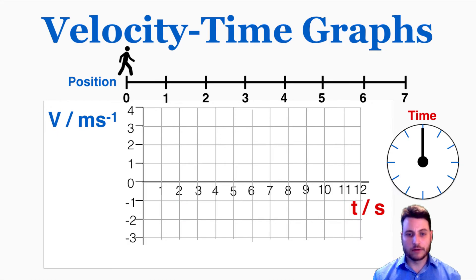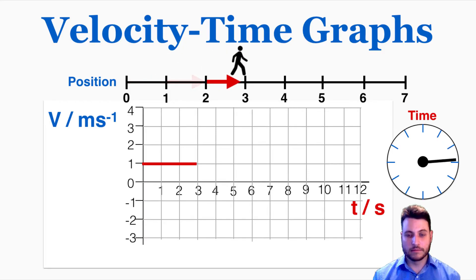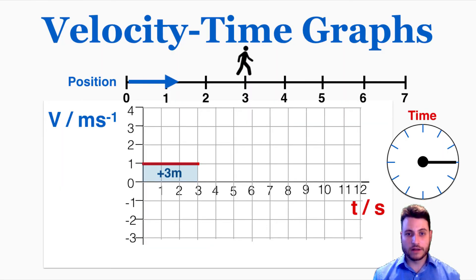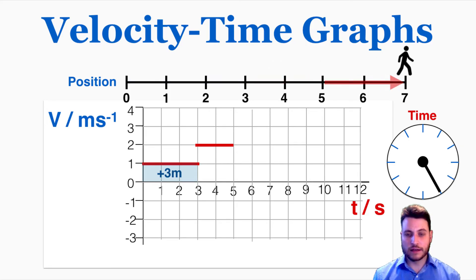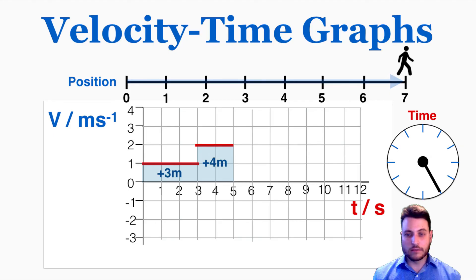We can try that with our original velocity-time graph to see how that works. The area under the curve for the first part is 1 meter per second times 3 seconds, which is equal to positive 3 meters — and I can see that this person did actually move positive 3 meters. Next they move at 2 meters per second for 2 seconds, so that area is 2 meters per second times 2 seconds which equals 4 meters, and I can see they did move another 4 meters, so altogether they've moved 7 meters.